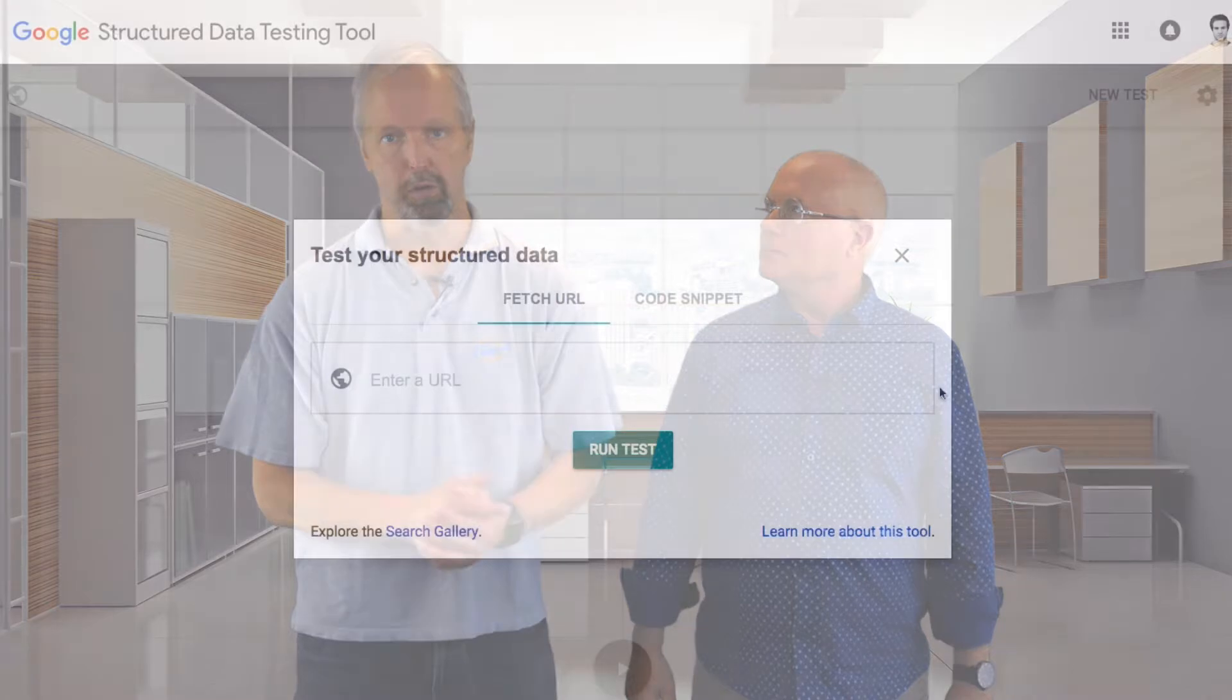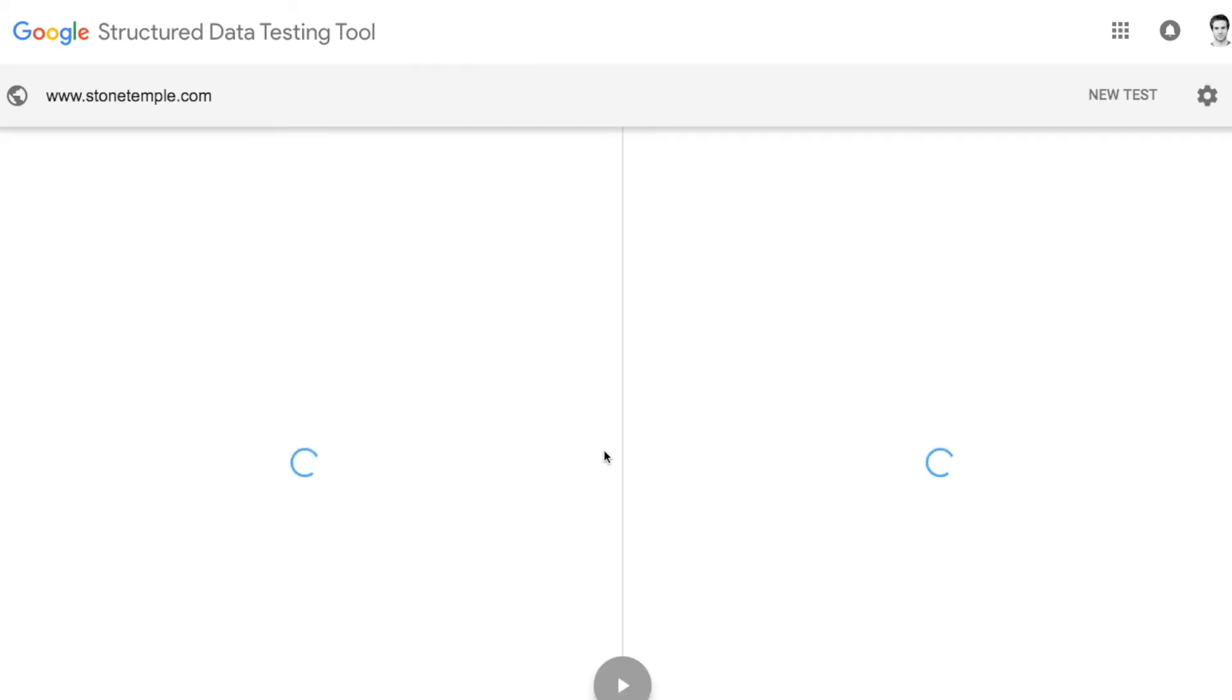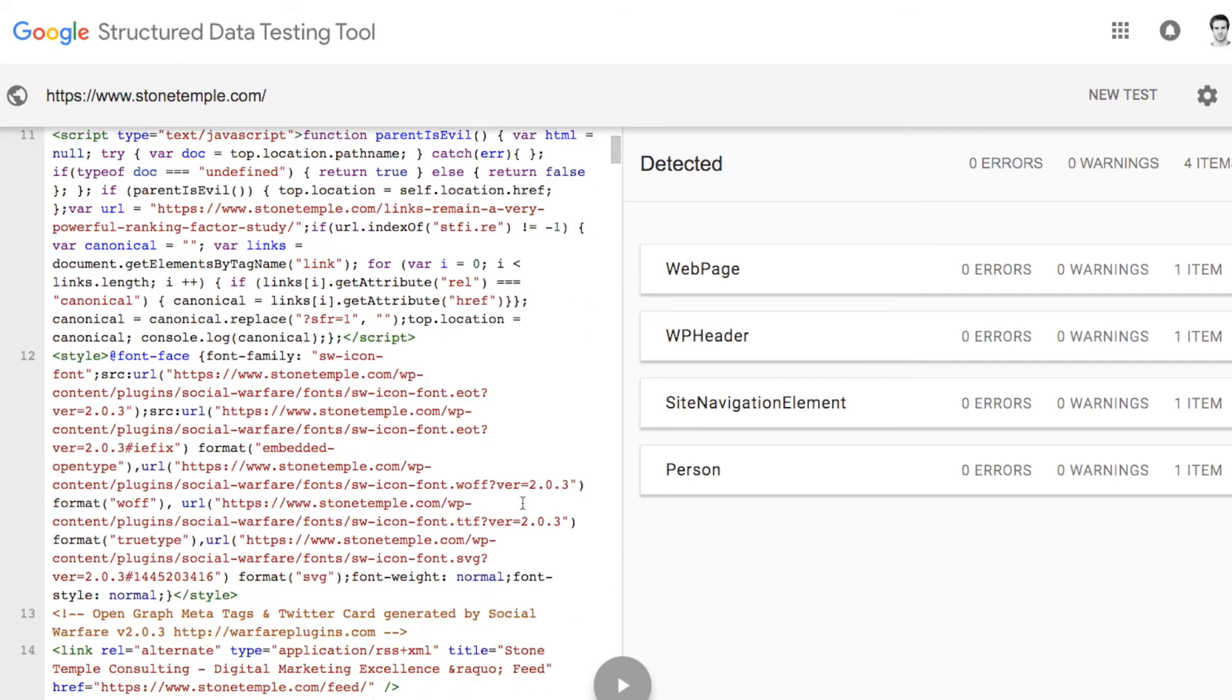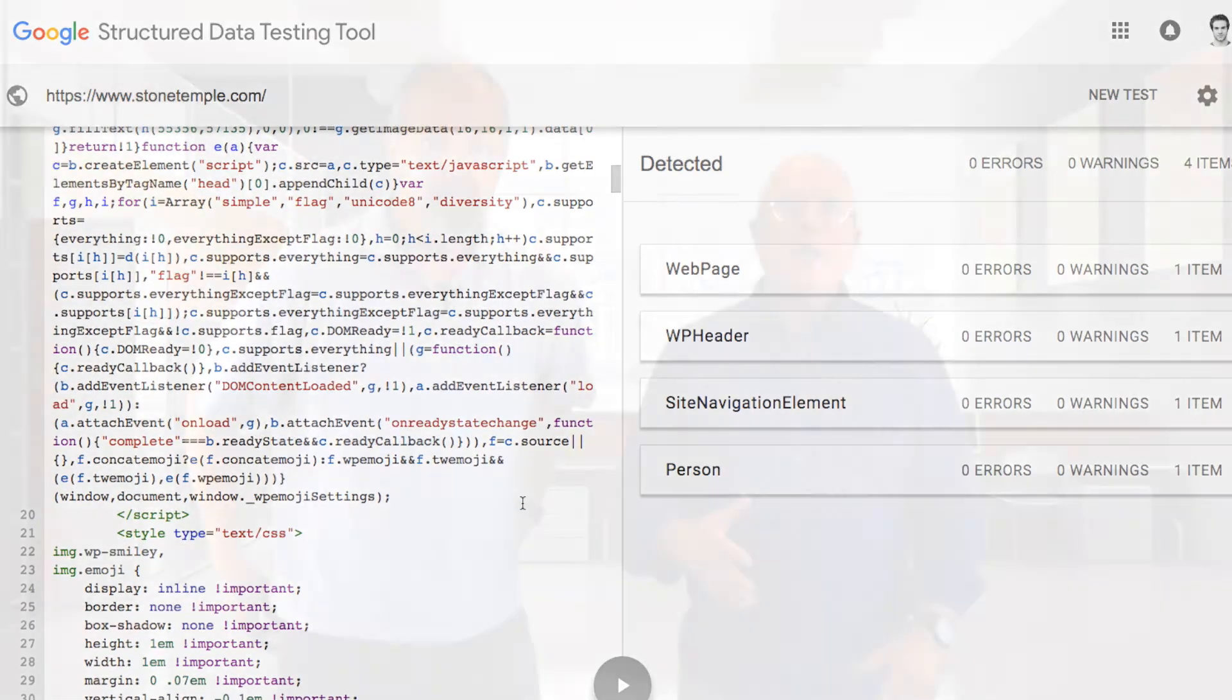Now, one more thing before we close this episode, Eric. Tell our viewers about a tool Google has that can help them implement structured data correctly. Sure. It's called the Structured Data Testing Tool. Just Google Structured Data Testing Tool and you'll find it. You can enter any web page or even a snippet of your code and the tool will tell you if you have any structured data errors. Of course, non-website-based implementations of structured data markup, such as Facebook's Instant Articles, have their own ways of testing and validating your implementation.